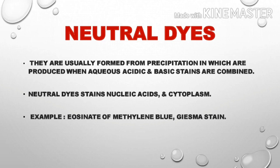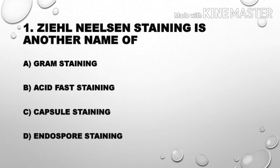Now, a few MCQs. First question: Ziehl-Neelsen staining is another name for — Option A: gram staining; Option B: acid fast staining; Option C: capsule staining; Option D: endospore staining. The correct answer is Option B, acid fast staining.